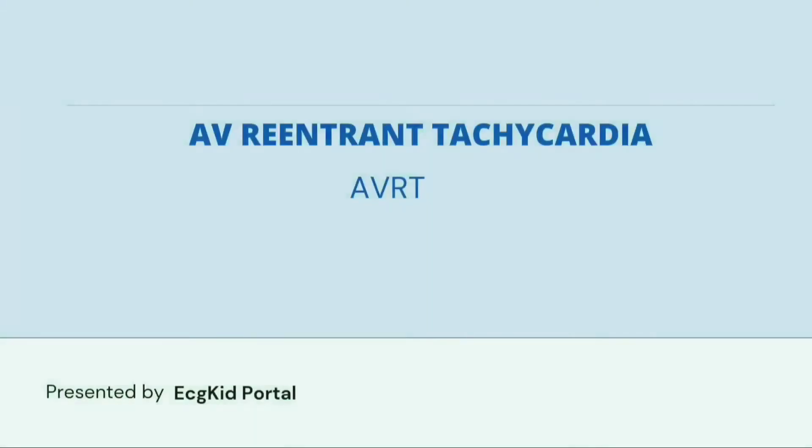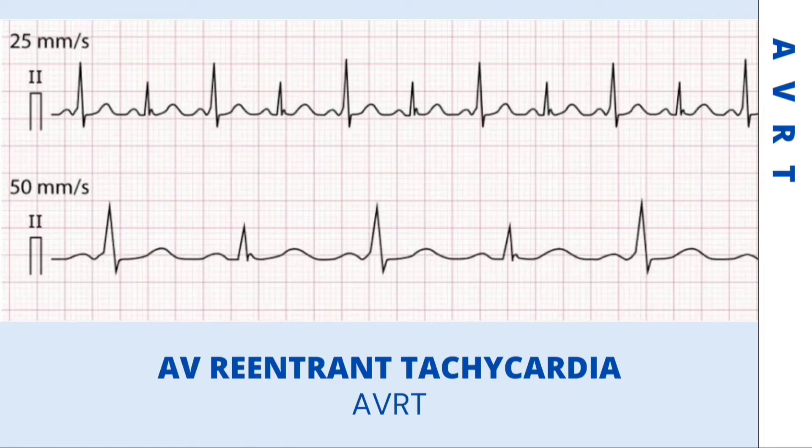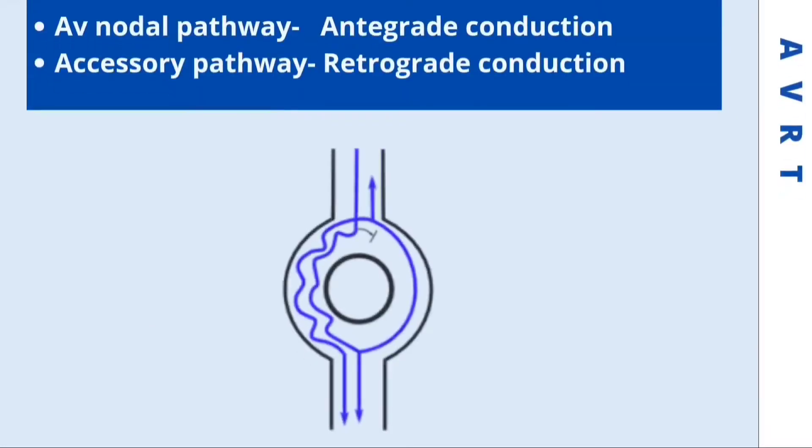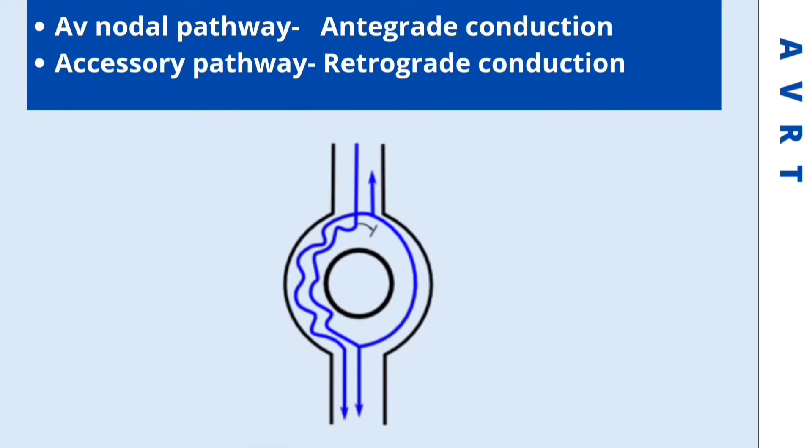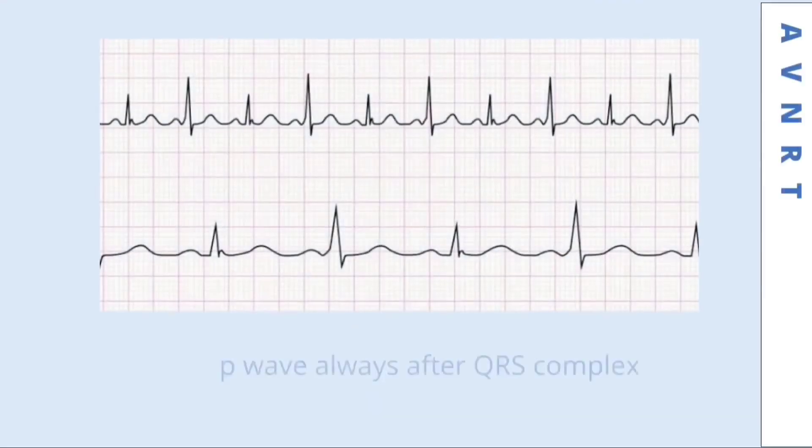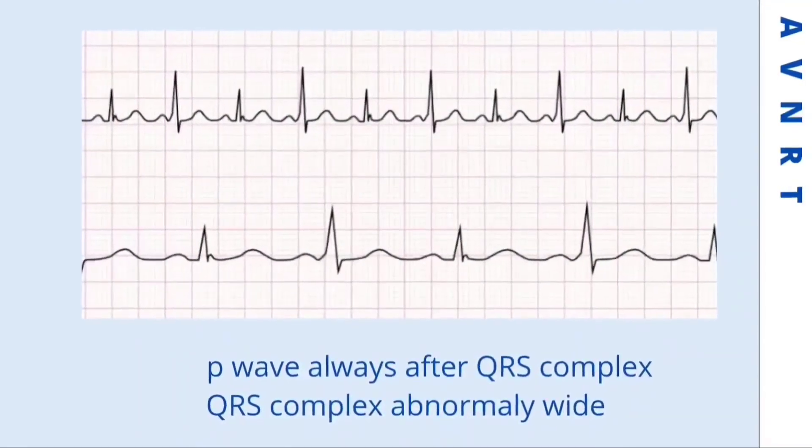Atrioventricular re-entrant tachycardia, or AVRT, is a macroscopic return circuit consisting of an AV nodal pathway and an accessory pathway. This arrhythmia is characterized by moving forward down the AV nodal pathway with retrograde conduction through the AV node, or vice versa. Unlike AVNRT, P waves are always present after the QRS complex, and QRS complexes are abnormally widened.